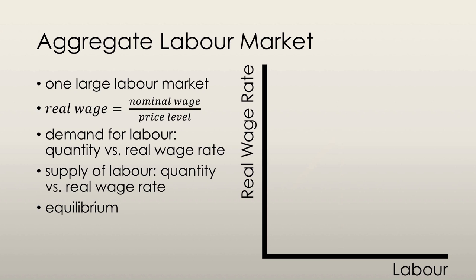Let's take a look at the aggregate labor market. The aggregate labor market is the idea that there is only one large labor market that determines the quantity of labor employed and the quantity of real GDP produced. The demand for labor is the relationship between the quantity of labor demanded and the real wage rate. The quantity of labor demanded is the number of hours hired by all the firms in the economy during a given time period, and this quantity demanded depends on the price of labor, which is the real wage rate.